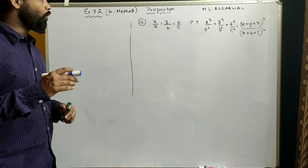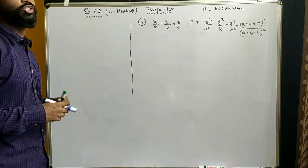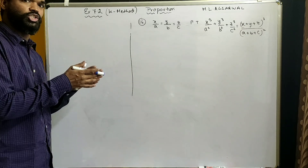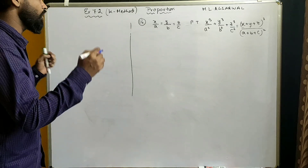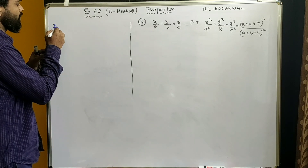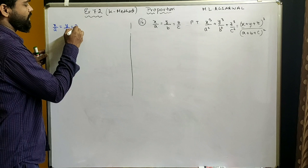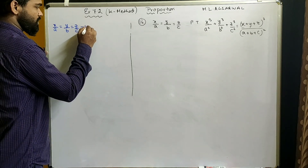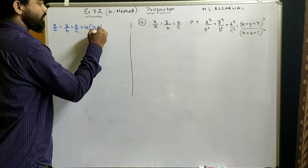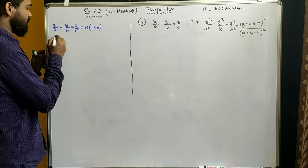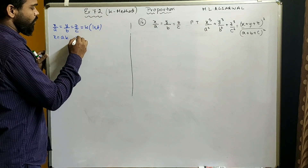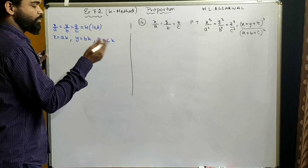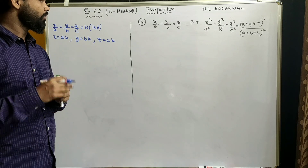In this video we'll discuss the K-method in ratio and proportion. We generally use the K-method when a series of ratios or fractions are given equal. For example, suppose x/a = y/b = z/c is given and you are required to prove something. We assume this common ratio as k, so x = ak, y = bk, and z = ck. Then we substitute these values to get the desired result.